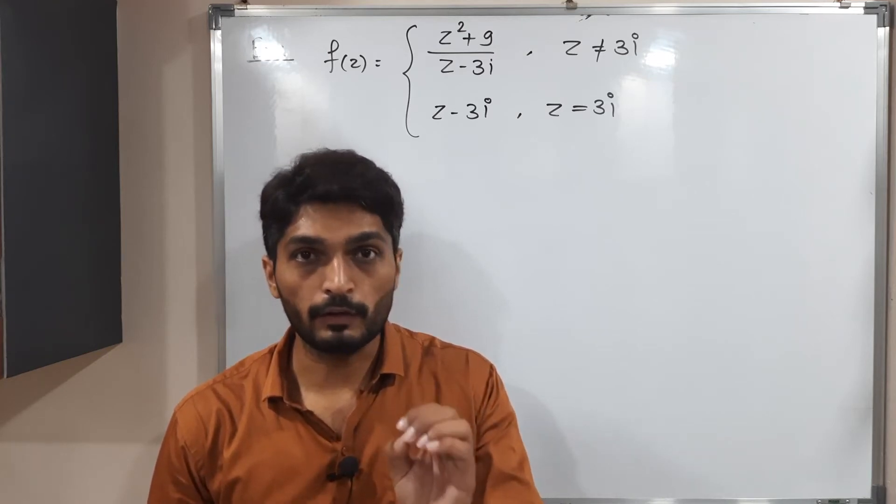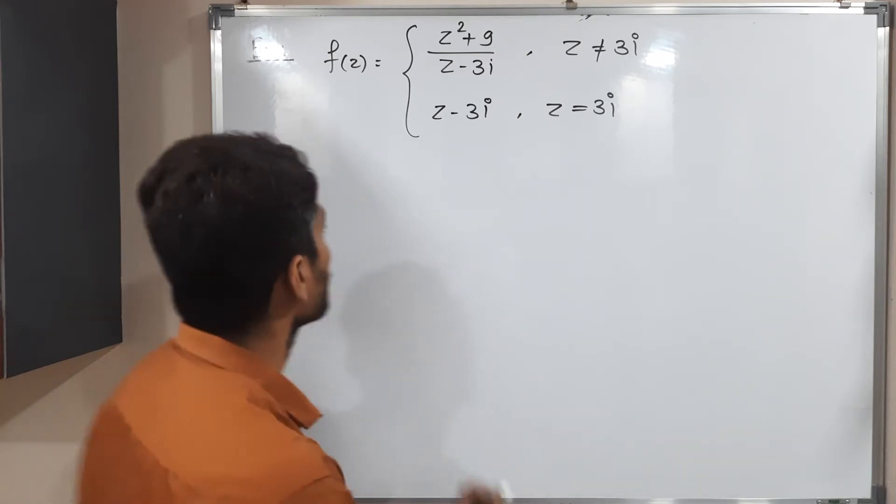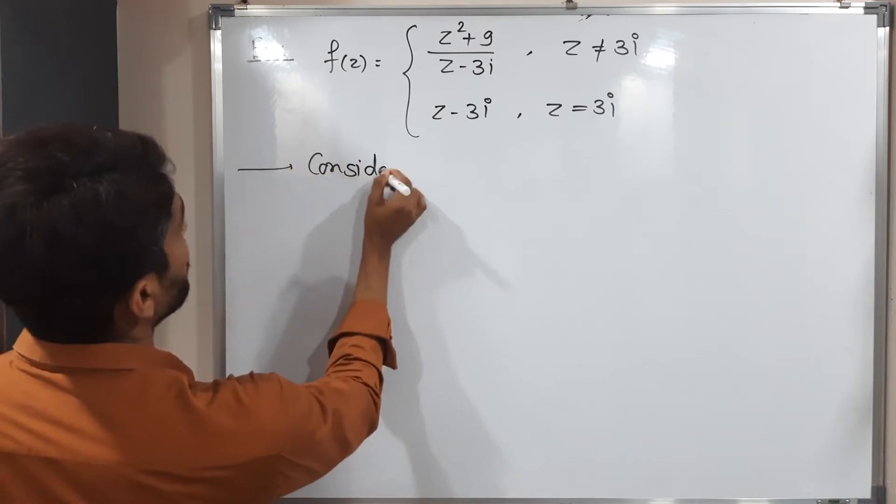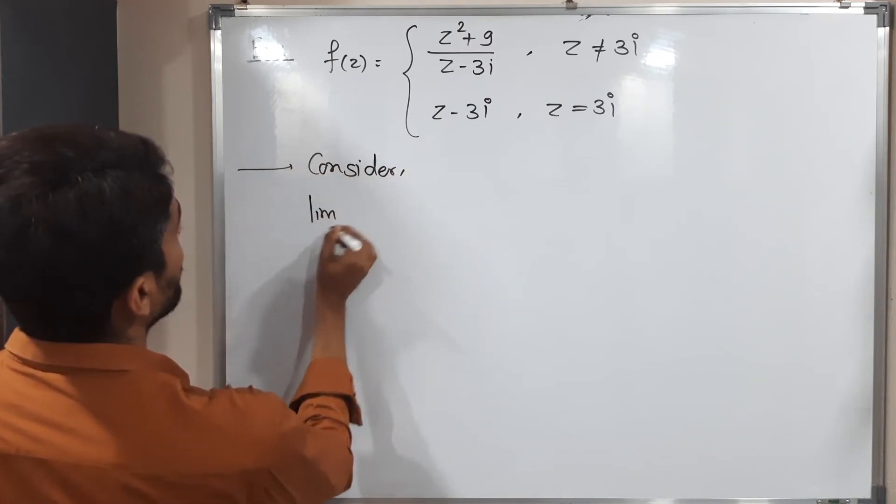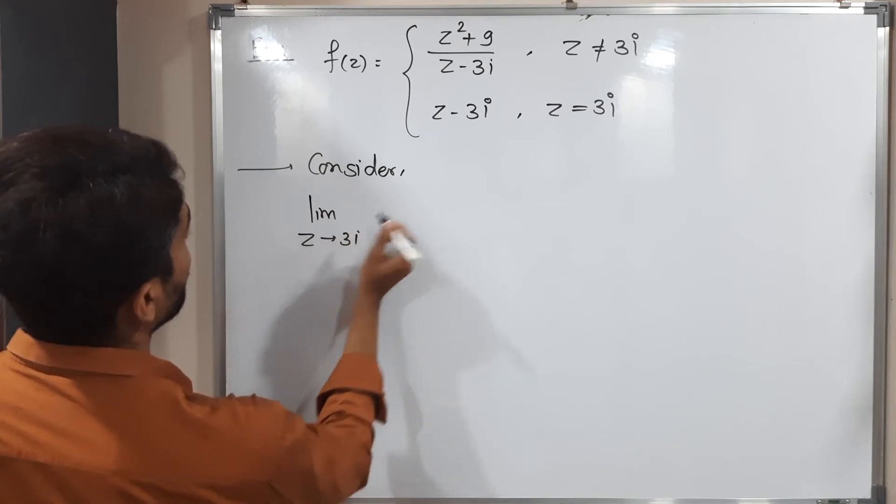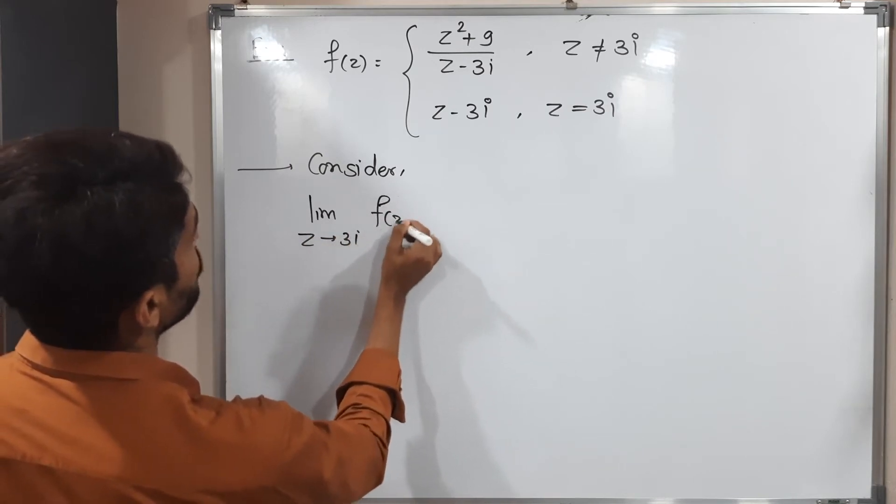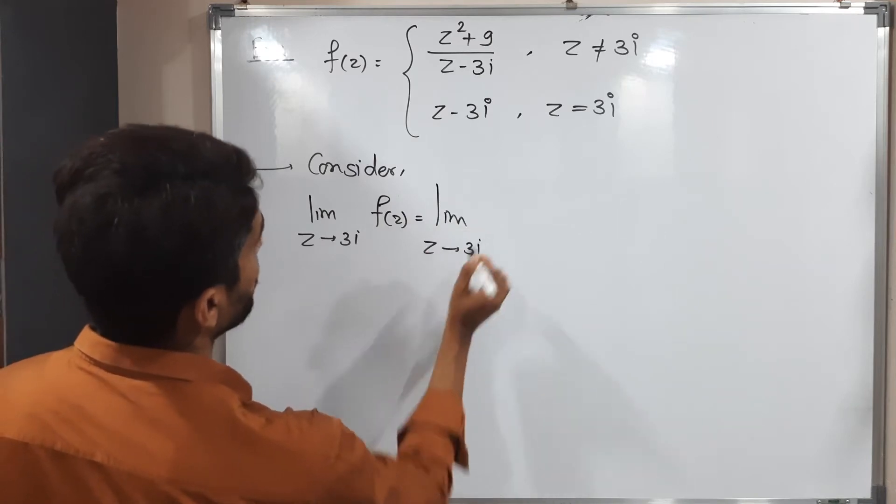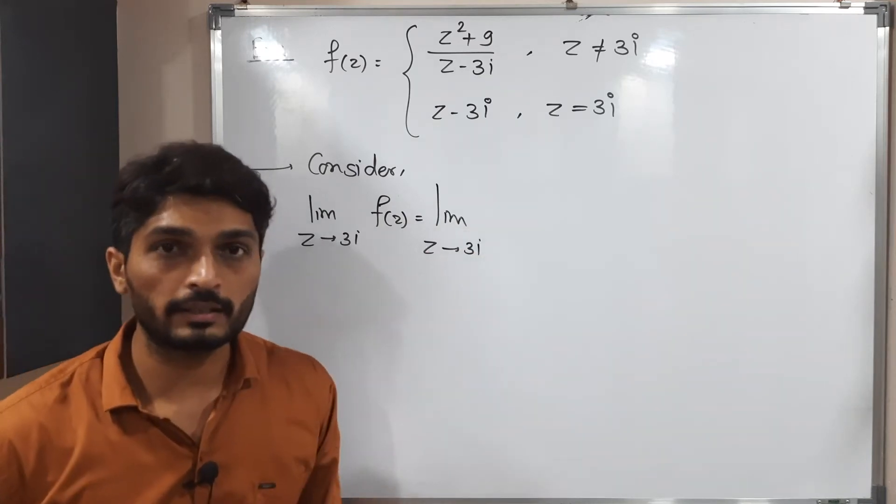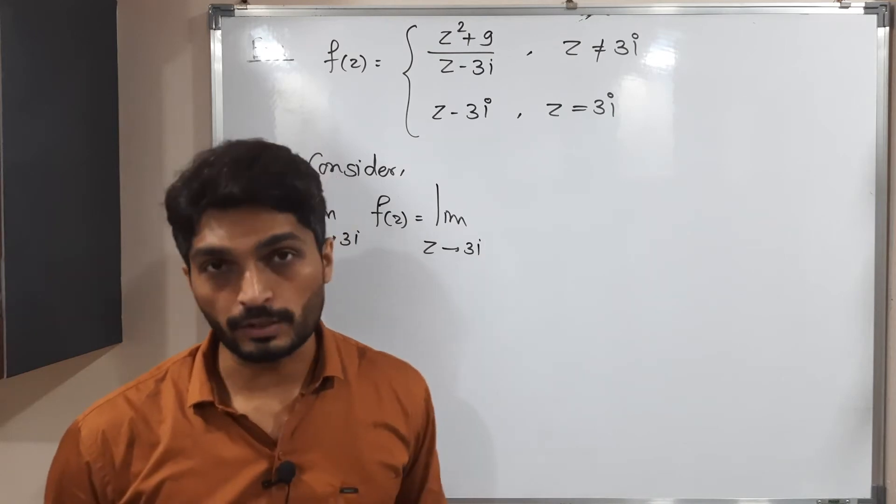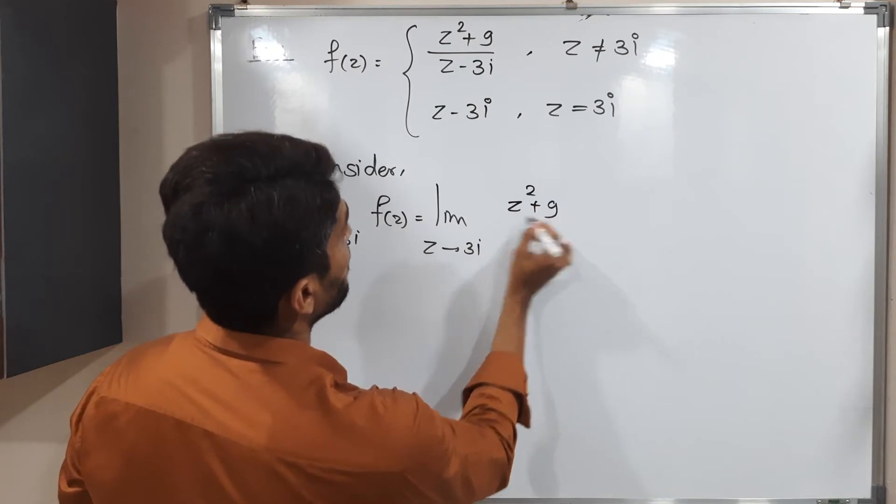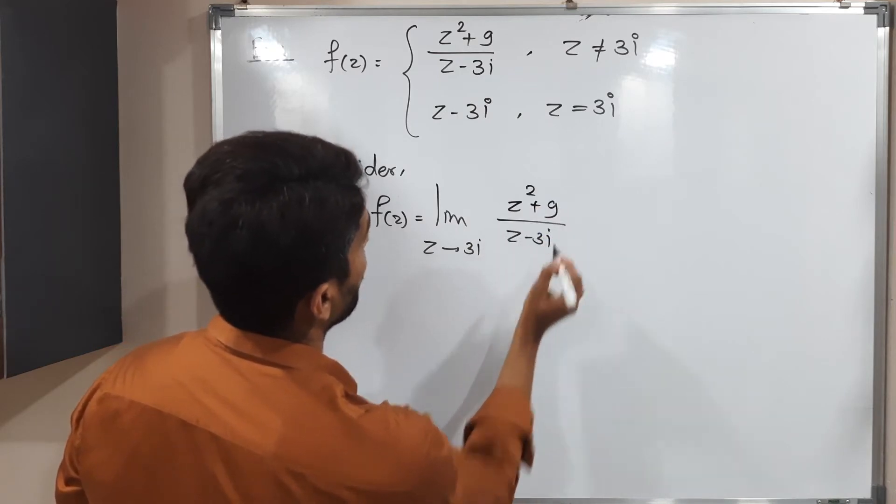First of all, we will find the value of limit. Let us do that. So consider limit z tends to 3i, my f of z. So this is equal to limit z tends to 3i. So z tends to 3i, that means basically z is not equal to 3i. So obviously, I should follow the first definition. So z square plus 9 upon z minus 3i.